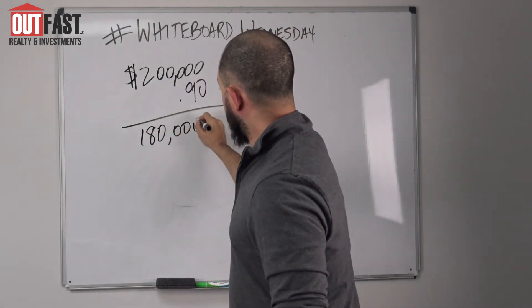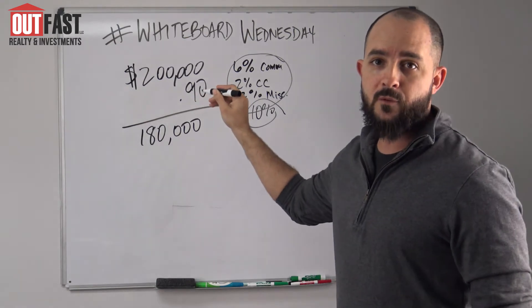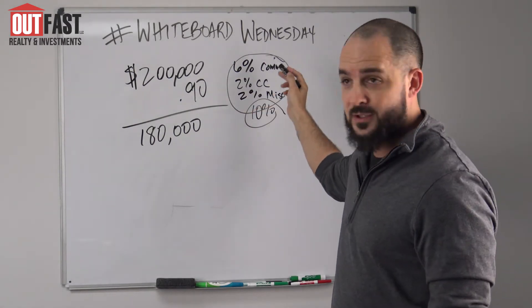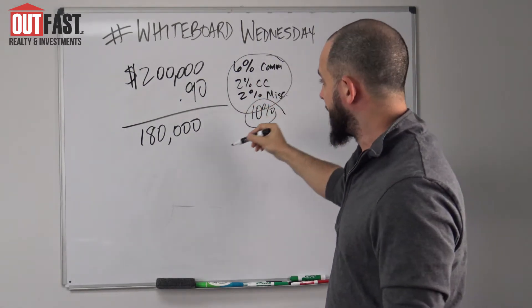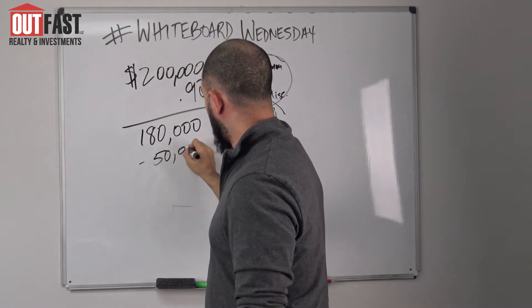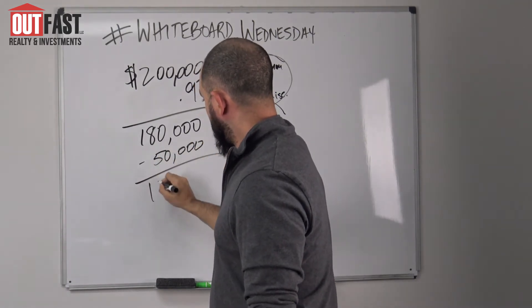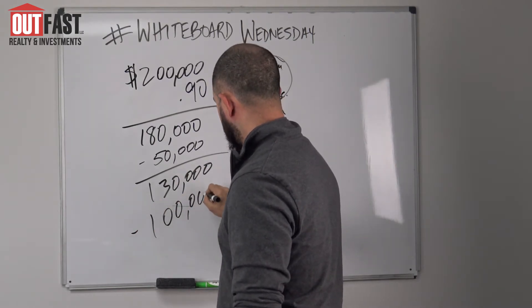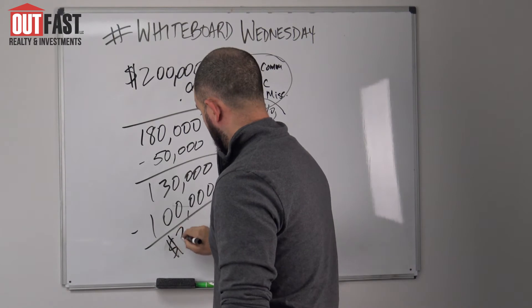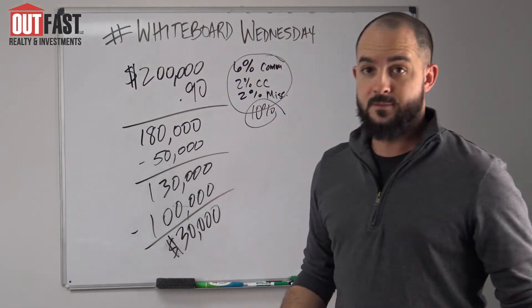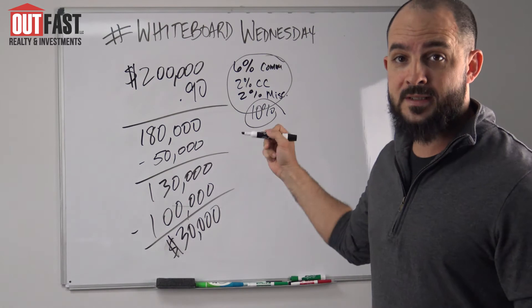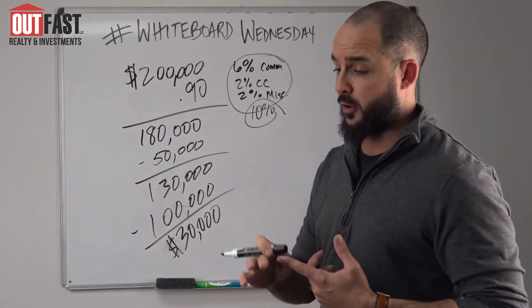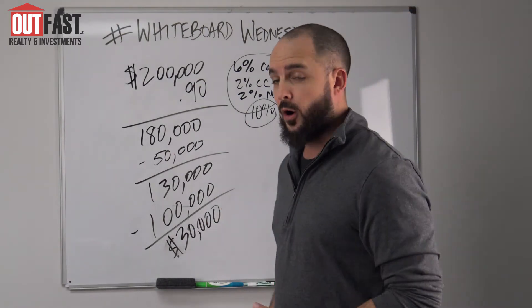We're now at $180,000 — literally $20,000 of your money is going away to those fees. Now subtract out the rehab cost of $50,000, which leaves you with $130,000. Then subtract the purchase price, and you're left with a whopping $30,000 in net profit. That's it — $30,000 in net profit, and that's not even including any holding costs such as hard money or partnership money. That's just the hard costs.